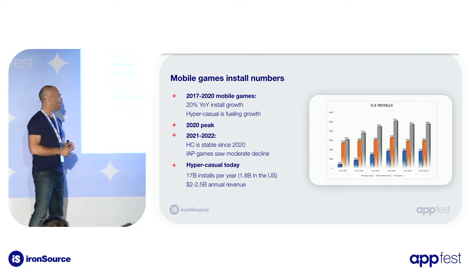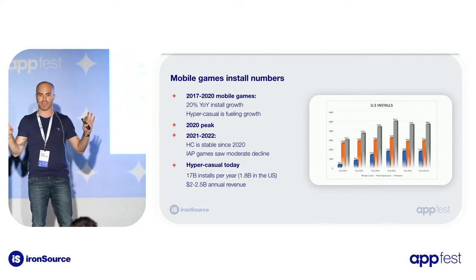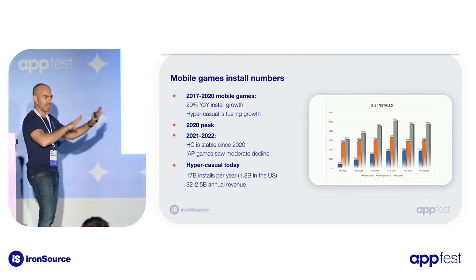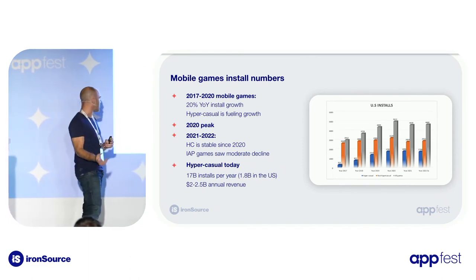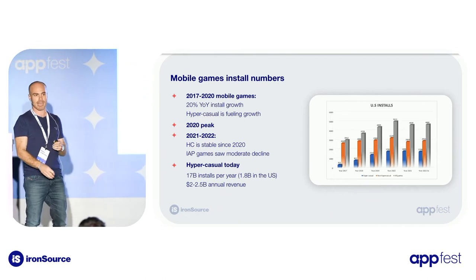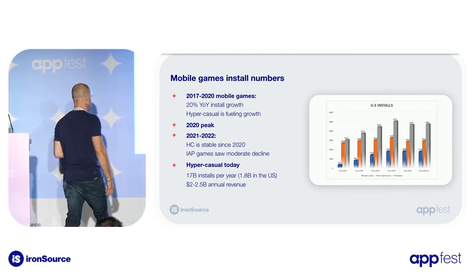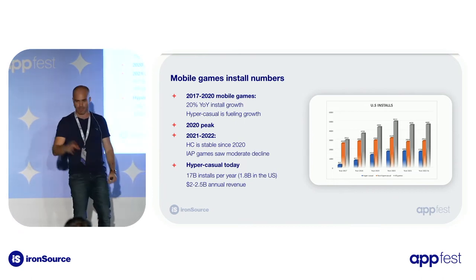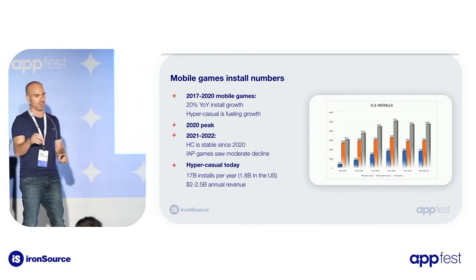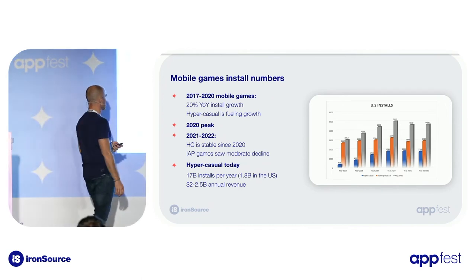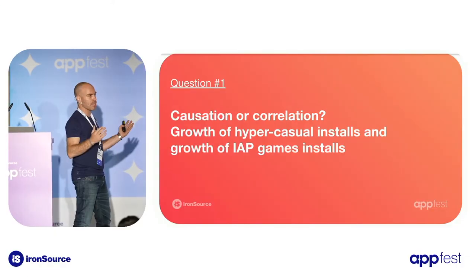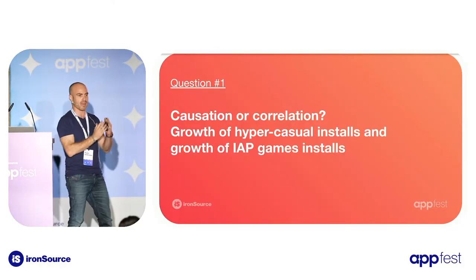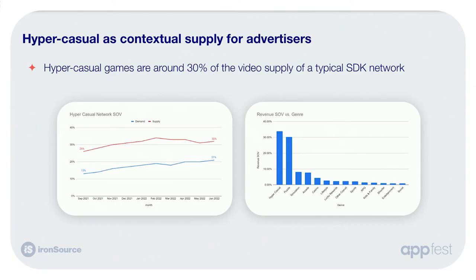2020 was a COVID peak. In 2021 and 2022, hypercasual stopped growing in terms of installs — not in revenue, because CPM, LTV, engagement, and retention are evolving — but it stopped growing in installs. Non-hypercasual actually saw a moderate decrease since hypercasual stopped growing. Today hypercasual is about 70 billion installs a year and about $2.5 billion in revenue. The question is whether there's a correlation between hypercasual growth and non-hypercasual growth — maybe they both grew as part of the ecosystem and COVID, or maybe they impact each other. We will try to analyze it.